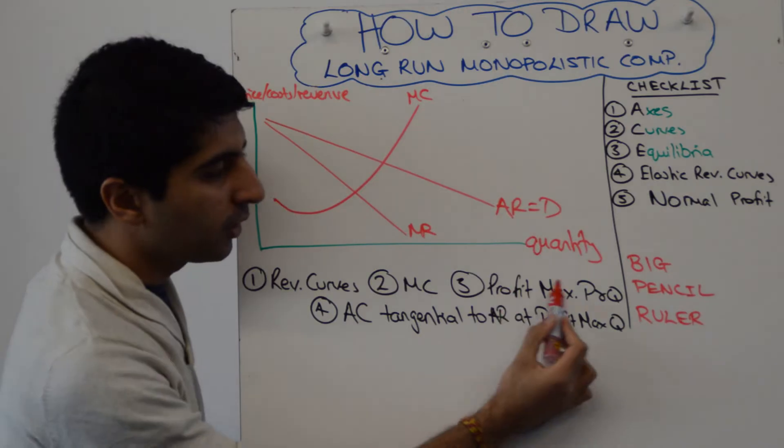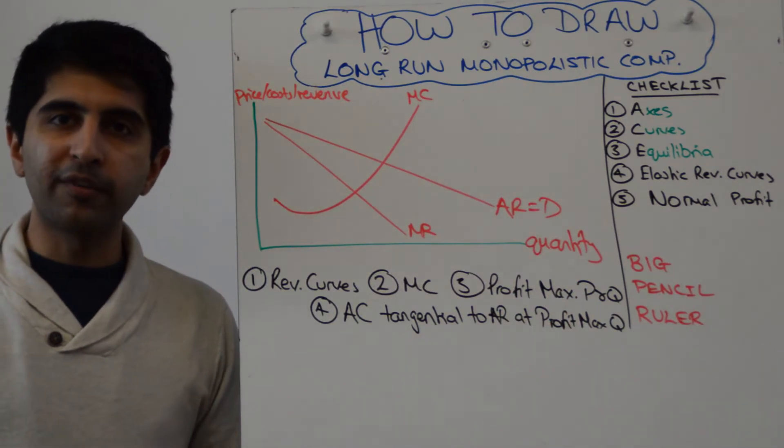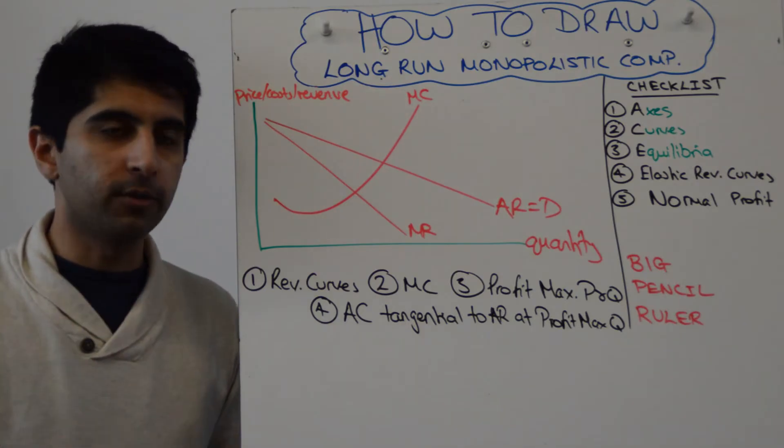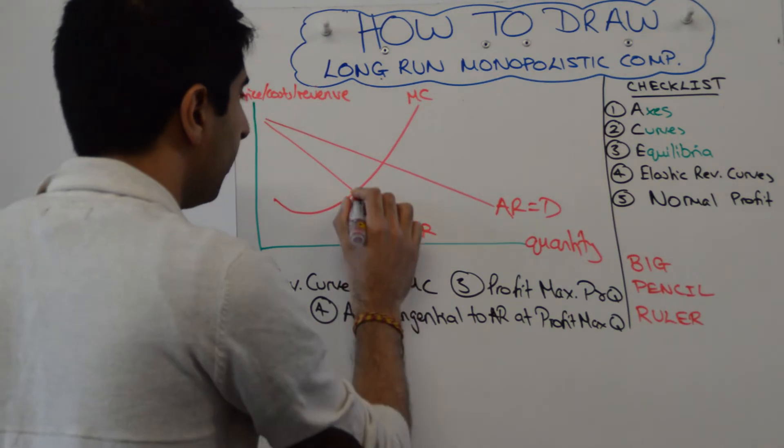Then you want to show your profit maximization price and quantity. We know that: profit maximize where marginal cost equals marginal revenue. Let's go there—that takes us to Q1, and the price we can read off the AR curve, call it P1.